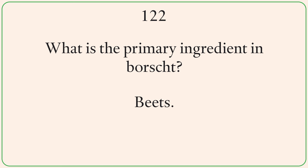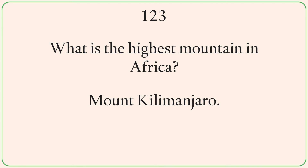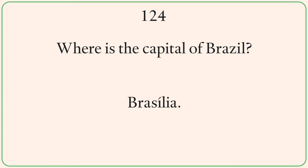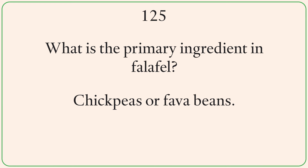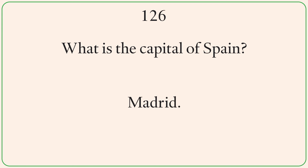What is the primary ingredient in borscht? Beets. What is the highest mountain in Africa? Mount Kilimanjaro. Where is the capital of Brazil? Brasilia. What is the primary ingredient in falafel? Chickpeas or fava beans. What is the capital of Spain? Madrid.